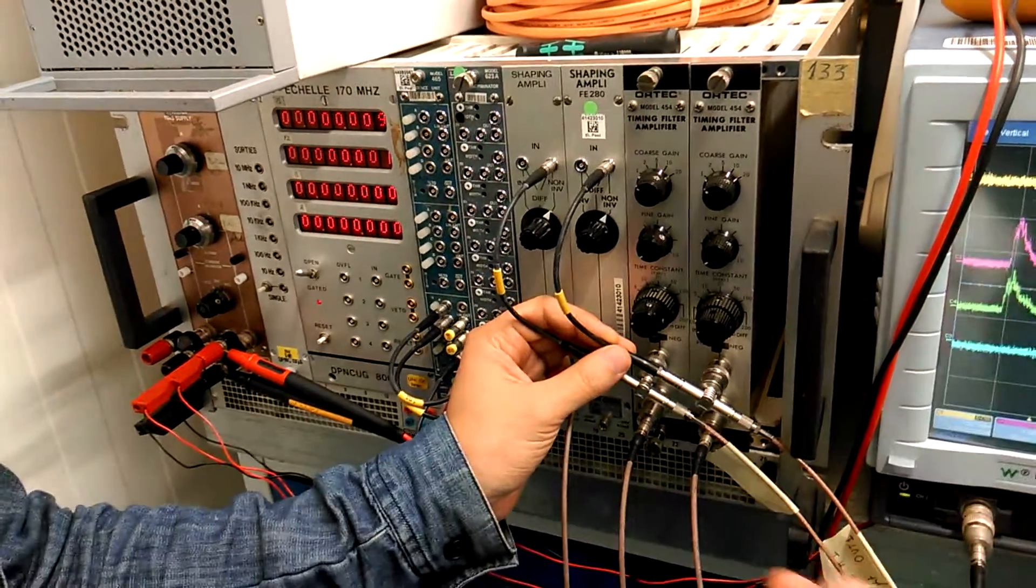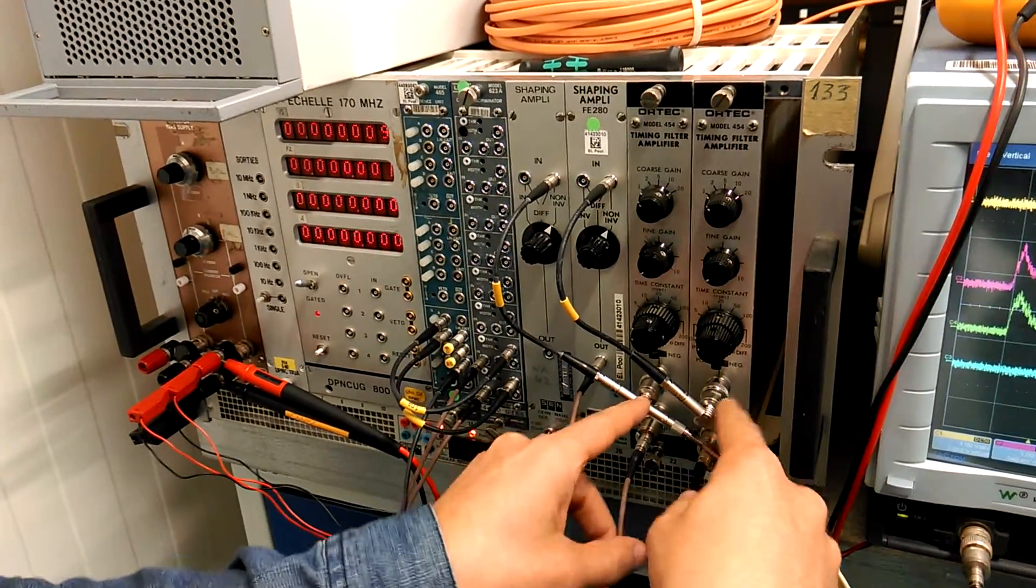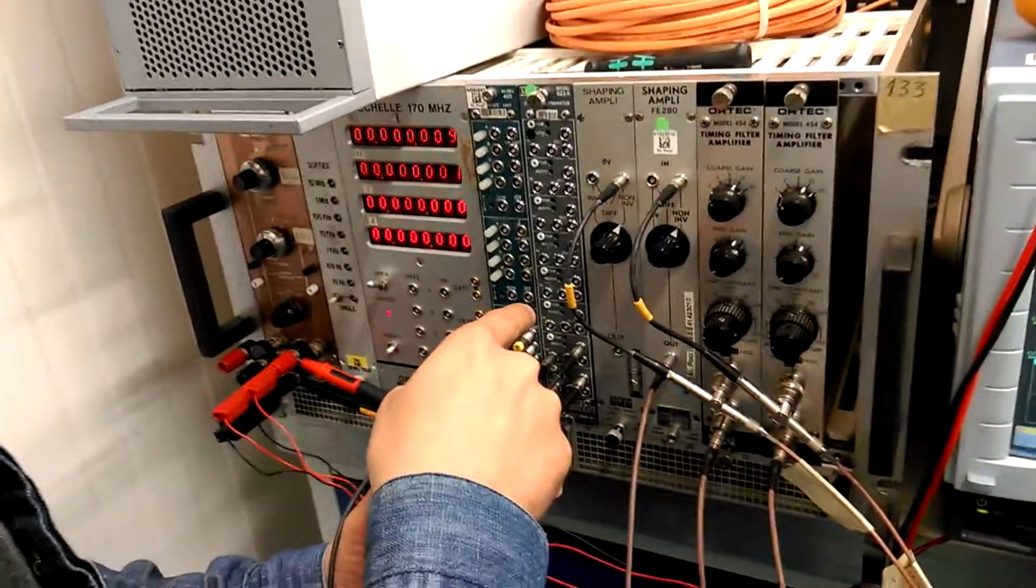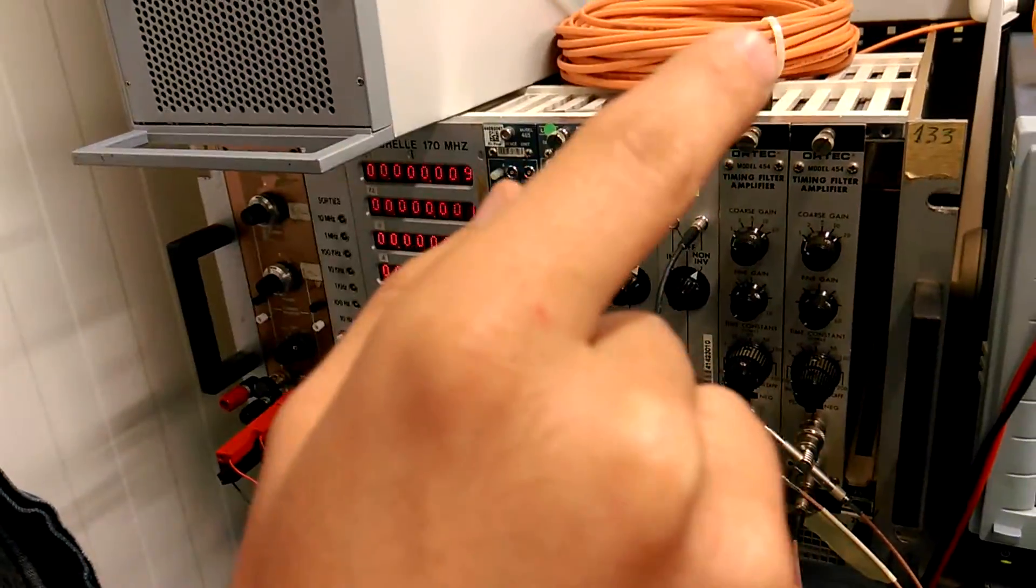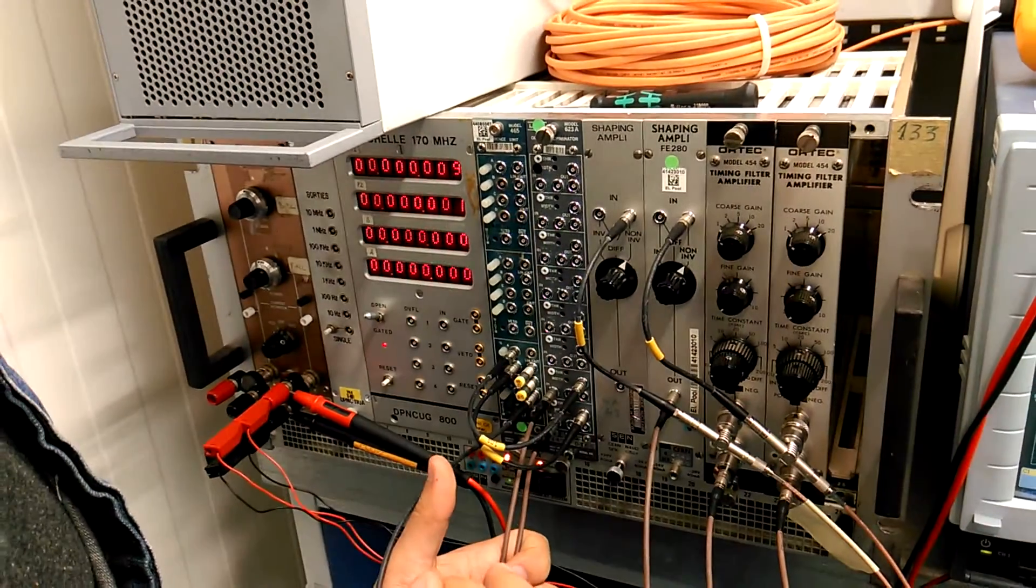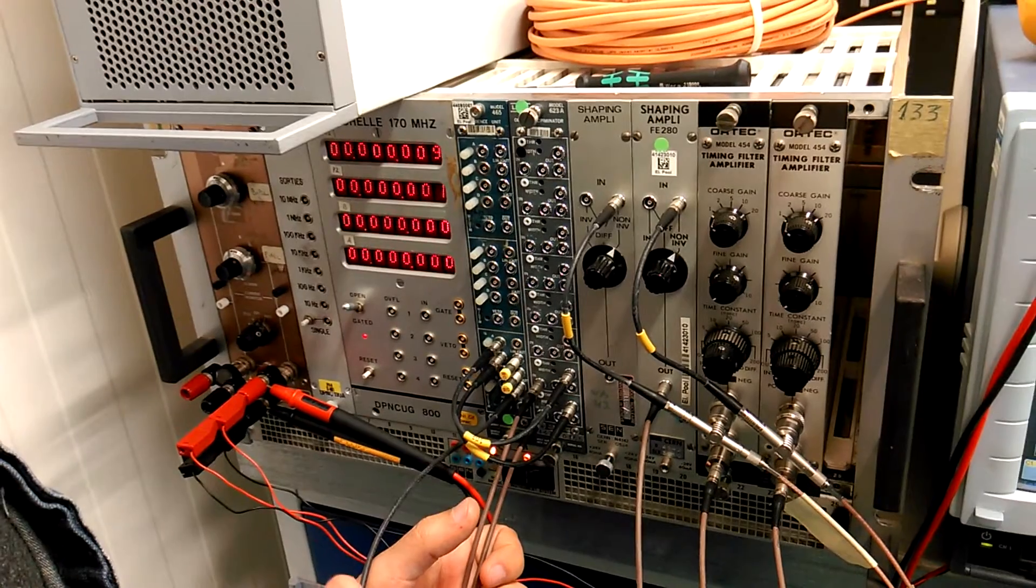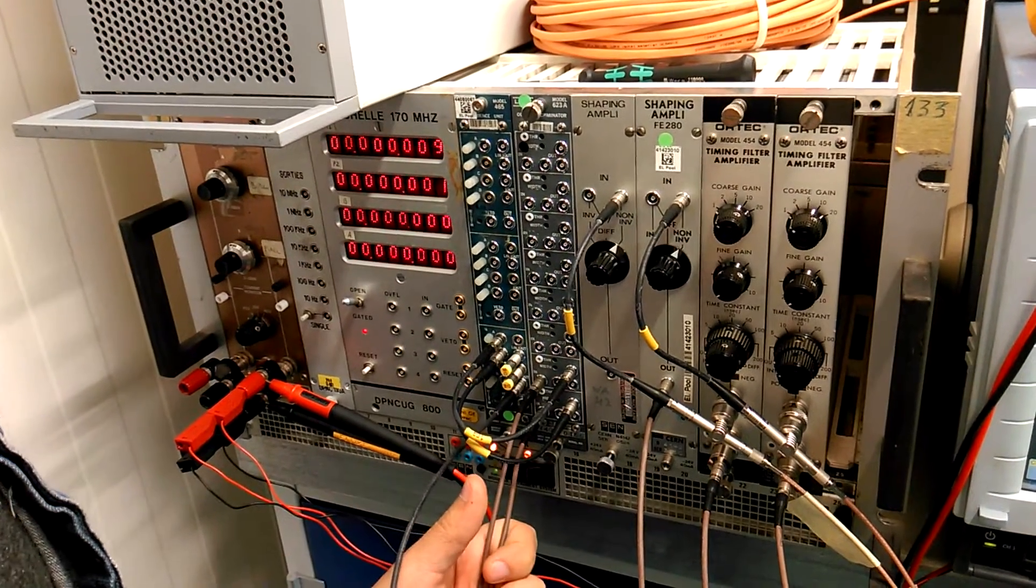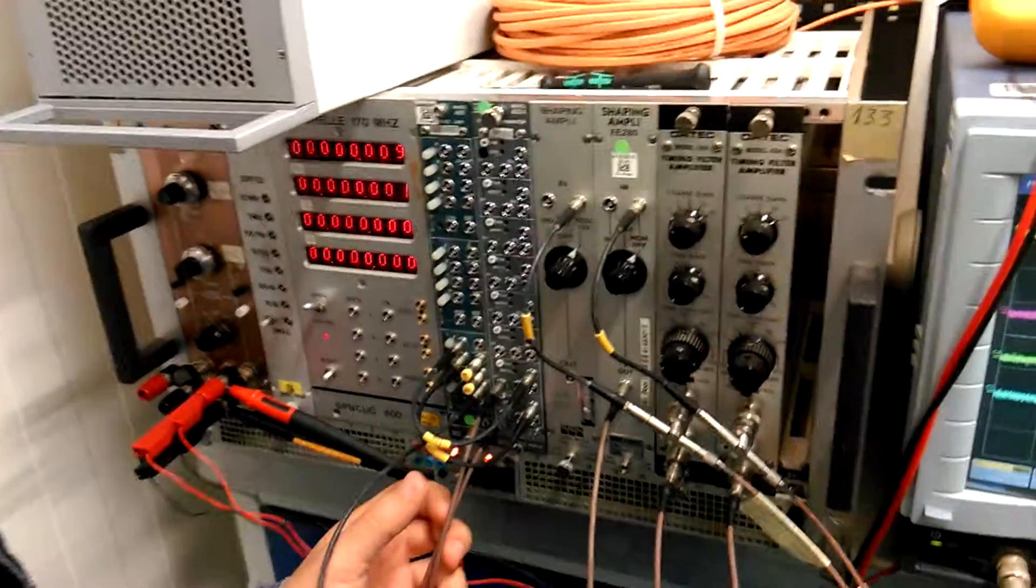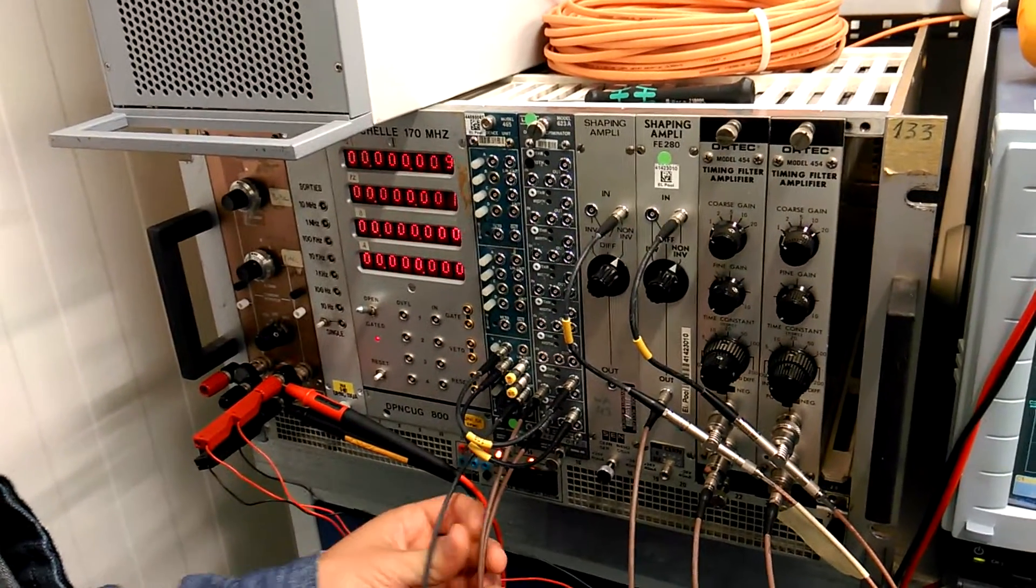Then we send the output of that signal to a discriminator module which generates a square pulse if the signal is below a certain threshold. Since it's negative, it's about 500 millivolts. Any signal below minus 500 millivolts generates a square pulse. That's to remove the noise, which is smaller signal.